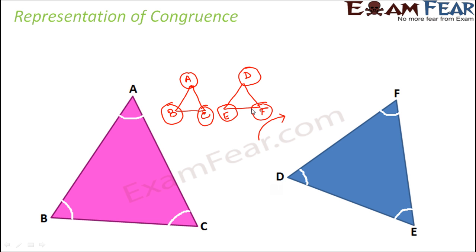So whenever two triangles are congruent, their corresponding parts will be equal. Now the corresponding parts is not only with regards to the vertices, it is also with regards to the sides and the angles. For example, what would be the corresponding angle of angle A? The corresponding angle would be angle D. Similarly, the corresponding angle for angle B would be angle E, and the corresponding angle for angle C would be angle F. Now the challenge — when you look at these two figures, it is very easy to say that the corresponding angle of angle B would be angle E.